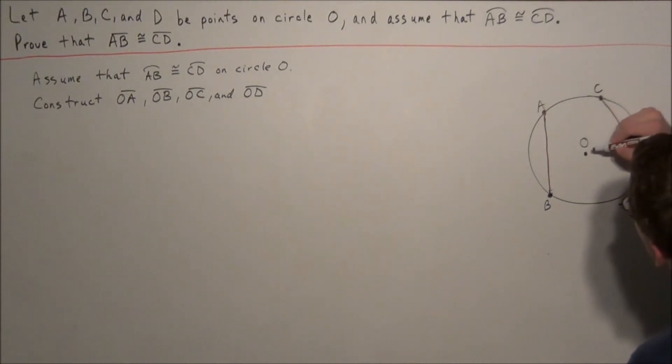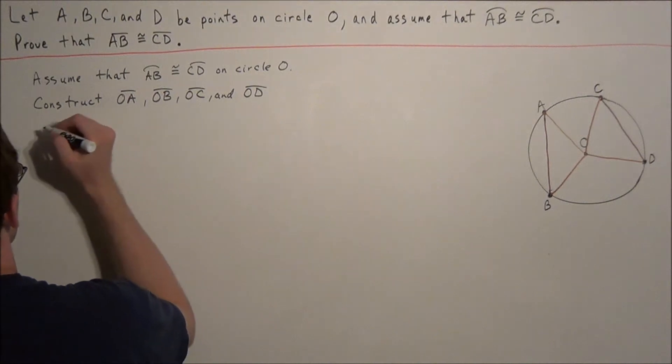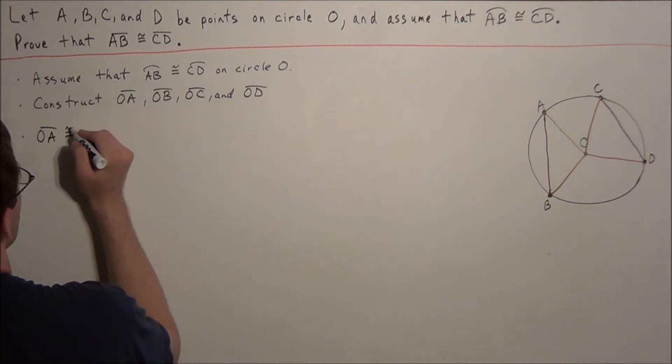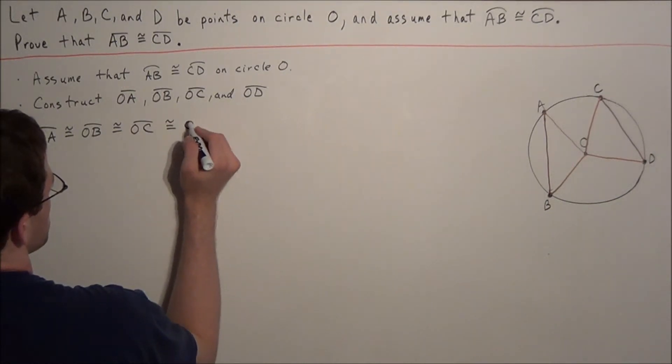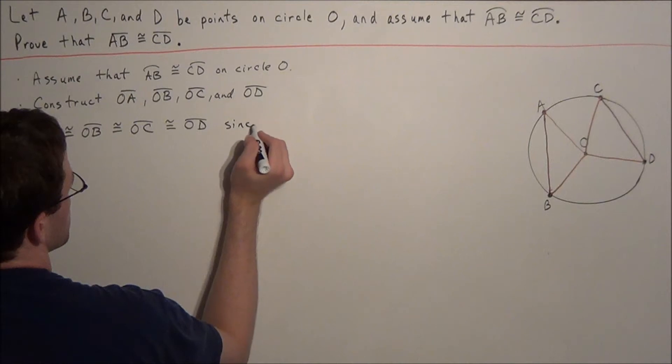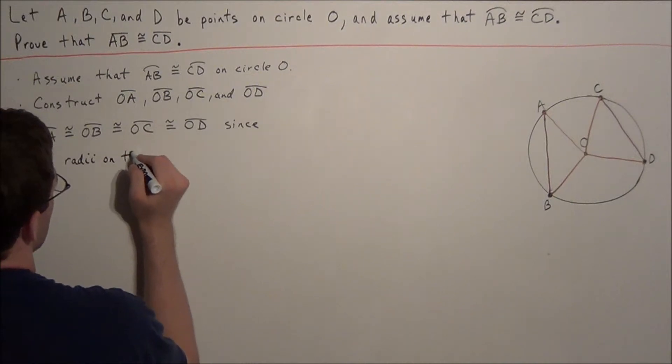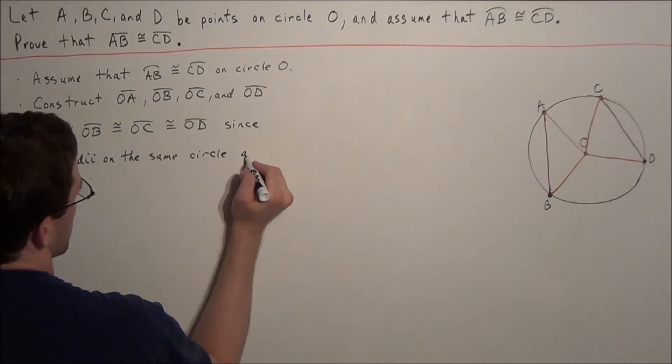So what this tells us is that these four line segments are congruent since all radii on the same circle are congruent. So for our next line, what we could say is we have that OA is congruent to OB, which is congruent to OC, which is congruent to OD, since all radii on the same circle are congruent.